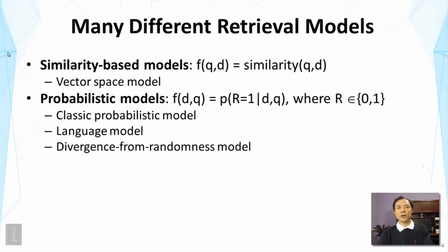The second kind of models are called probabilistic models. In this family of models, we follow a very different strategy, where we assume that queries and documents are all observations from random variables. And we assume there is a binary random variable called r here to indicate whether a document is relevant to a query. We then define the score of a document with respect to a query as the probability that this random variable r is equal to 1 given a particular document and query. There are different cases of such a general idea. One is classical probabilistic model, another is language model, yet another is divergence from randomness model.